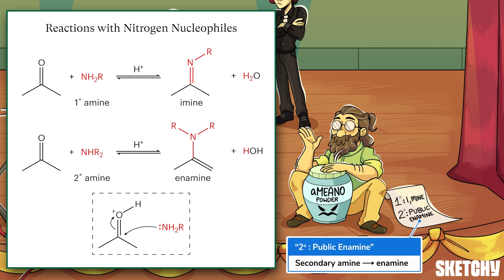If the amine nucleophile is secondary — so it has two R-groups on the nitrogen — an enamine will be formed. An enamine looks like an amine attached to an alkene. You might have noticed the secondary song on the list is 'public enamines' to remind you of this. Seems like spelling isn't an emphasis at SketchyU, but I hear all the students are studying for multiple choice exams anyway.